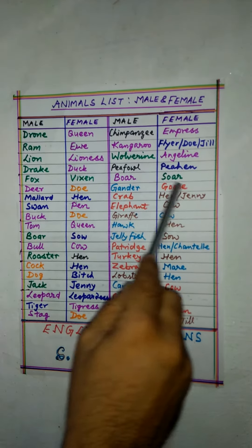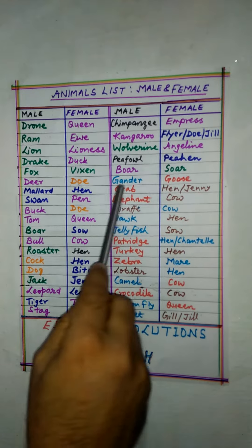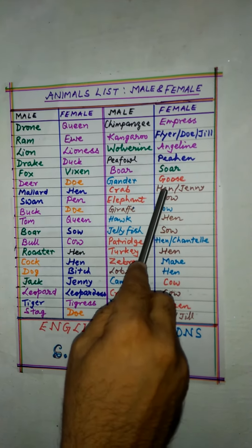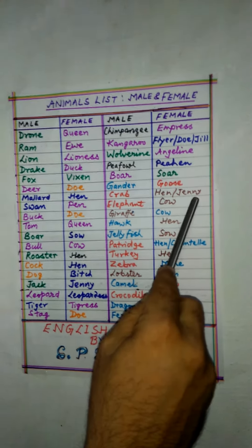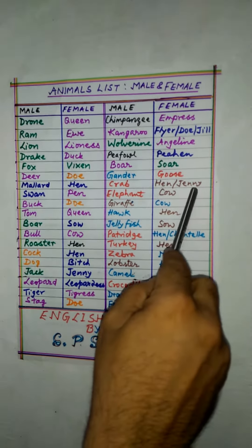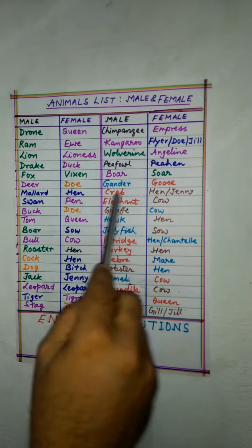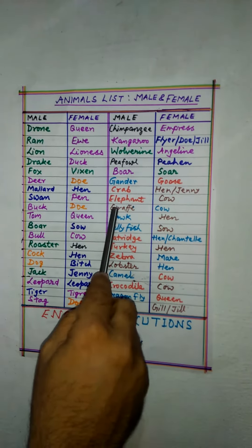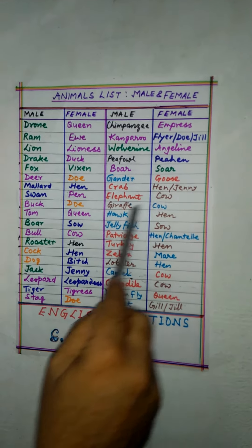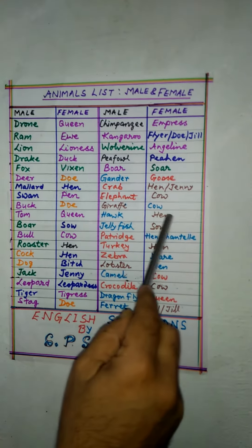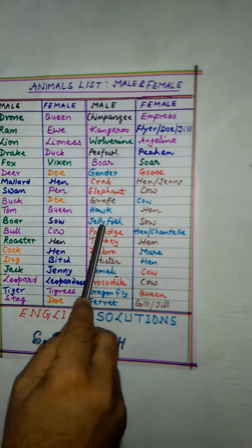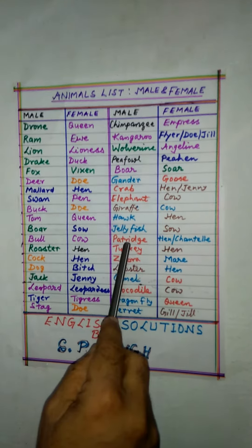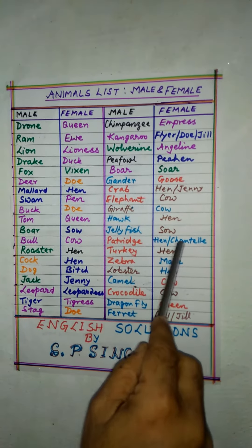Gander — goose. Crab — there are two names: hen and jenny. Anyone can be picked up. Elephant — cow. Giraffe — cow. Hawk — hen. Jellyfish — sow. Partridge — hen or chenel.